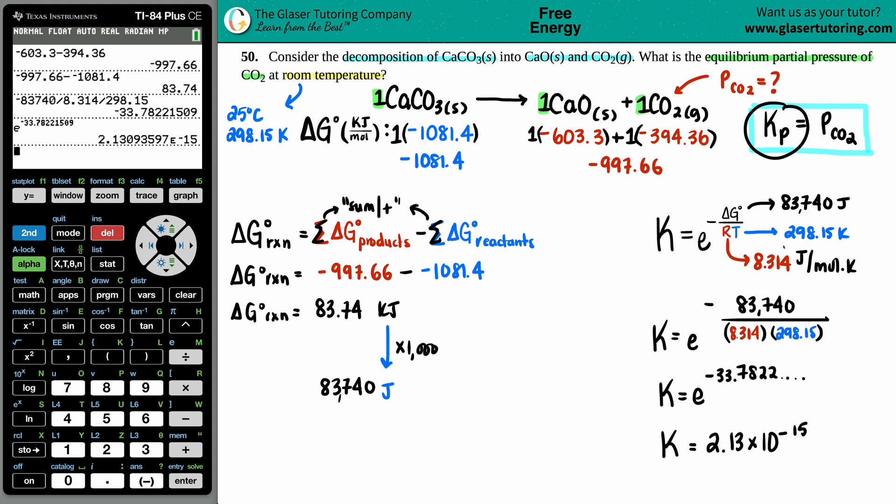But remember, the equilibrium constant in this case equals the partial pressure of the CO2. For the Kp value there are no units. However, since they're equal to each other, the partial pressure of the CO2 is 2.13 times 10 to the -15. And now since we're talking about pressure, I have to use a unit, and just know that the units that are allowed in a K expression for pressure is atm. So this has to be an atm, and that is your final answer.